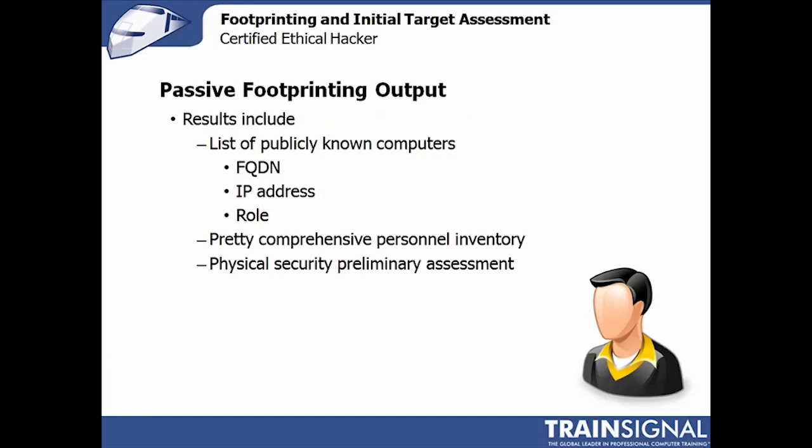The output of all this passive footprinting is a rich set of information: a list of publicly known computers including fully qualified domain names, IP addresses, and their roles such as DNS servers and email servers via MX records. You also get a fairly comprehensive personnel inventory, and with social media, photographs, and geotagging you can get a good idea of who works at the bank, where they work, and who they work for. Finally, you get an early assessment of physical security by examining boundaries and perimeters from anywhere in the world.